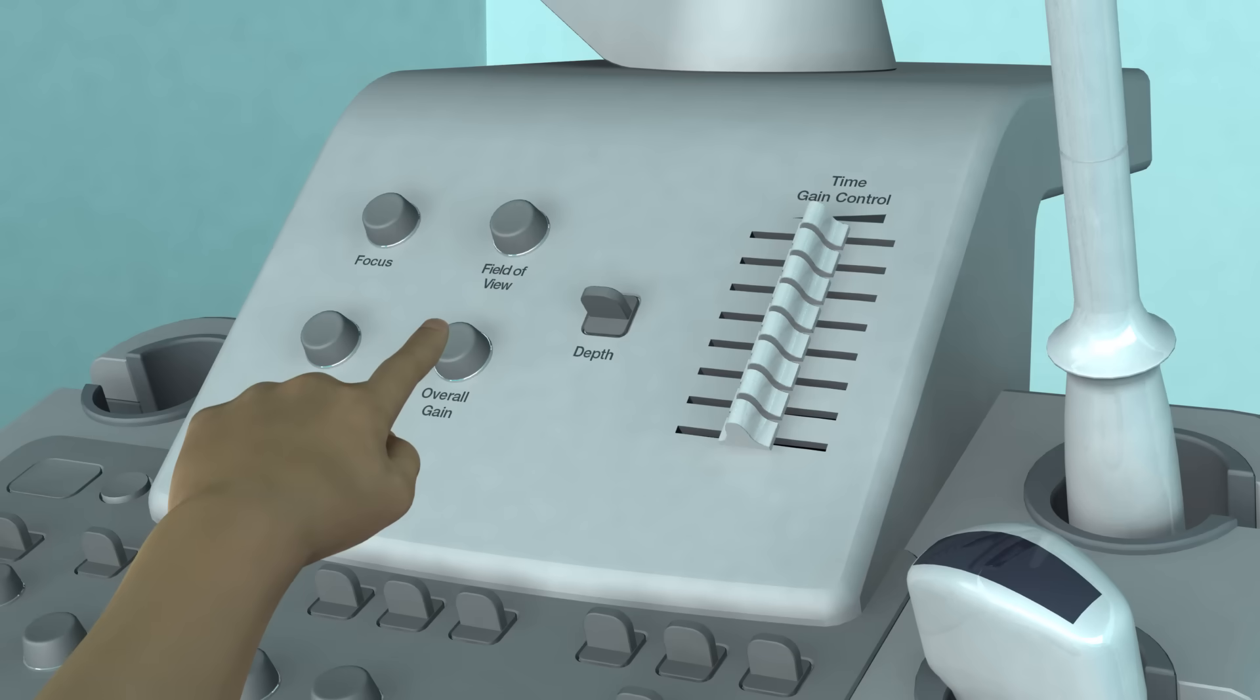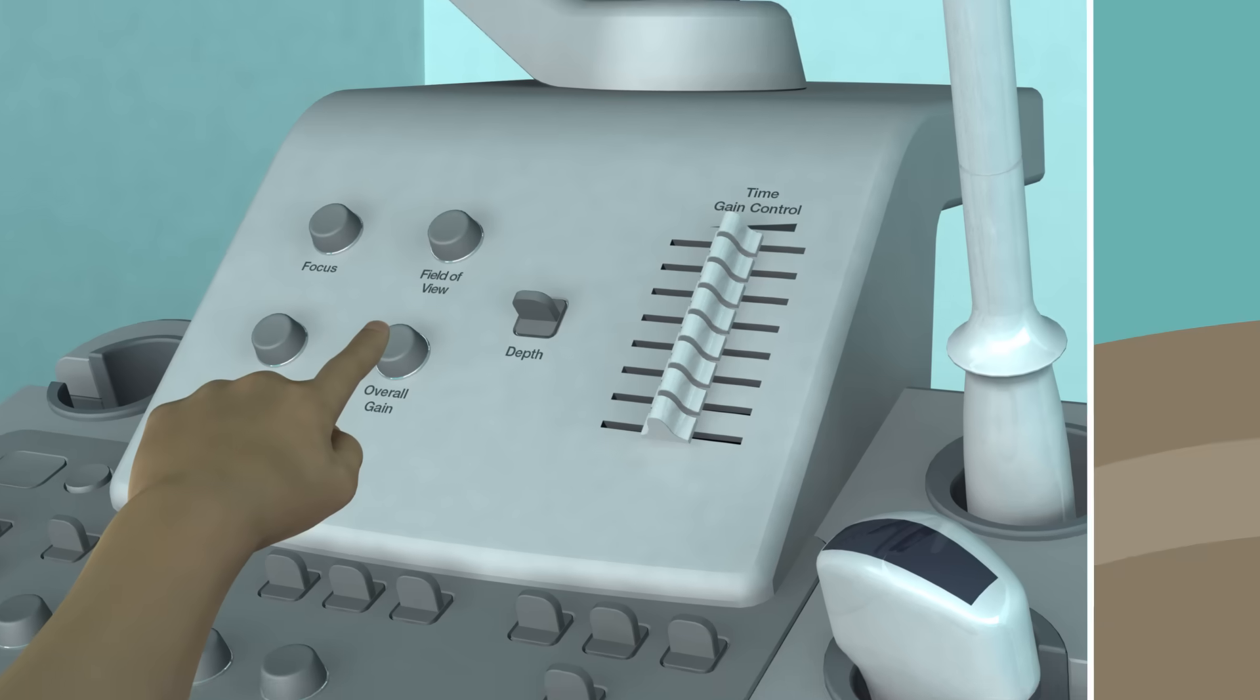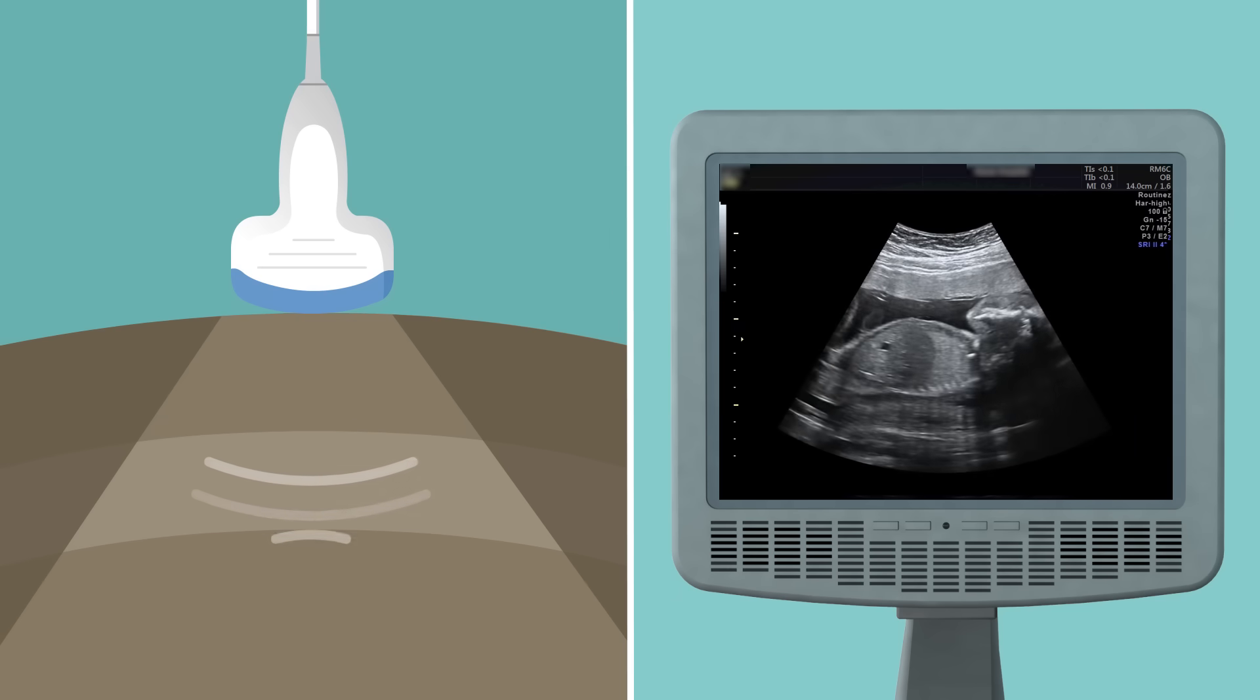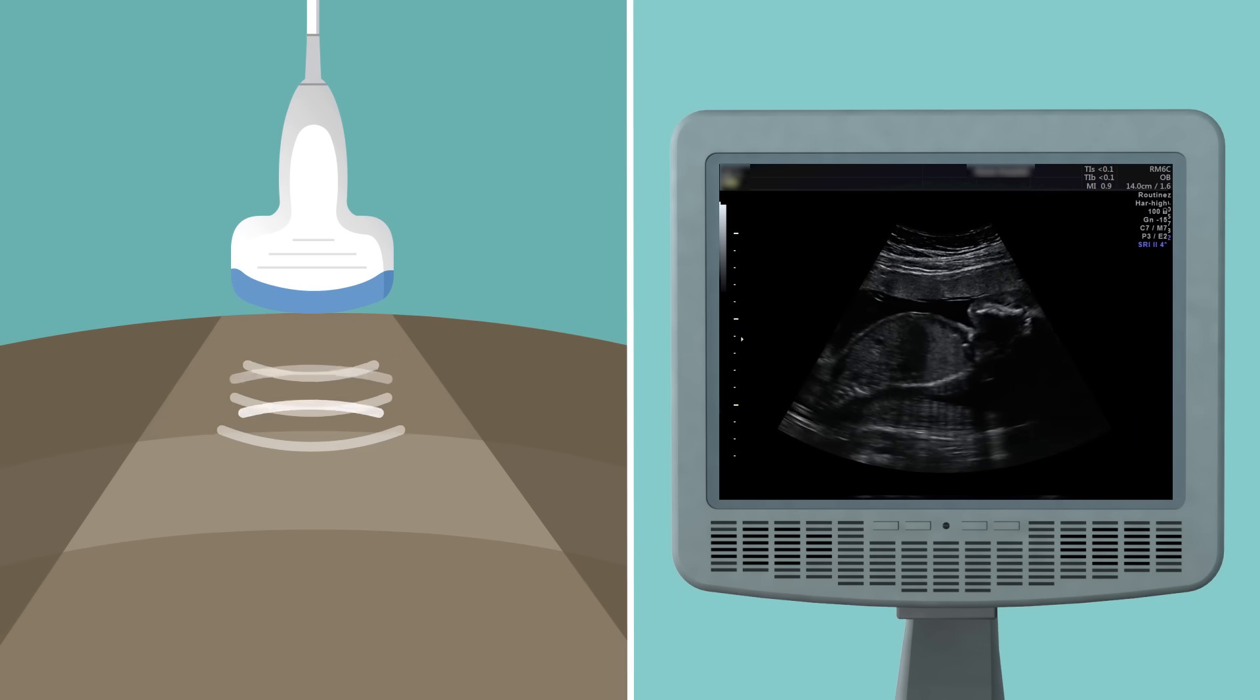Overall gain controls how much the overall signal received by the probe is amplified, like turning up the volume on a stereo. The higher the gain, the brighter the overall image will be.